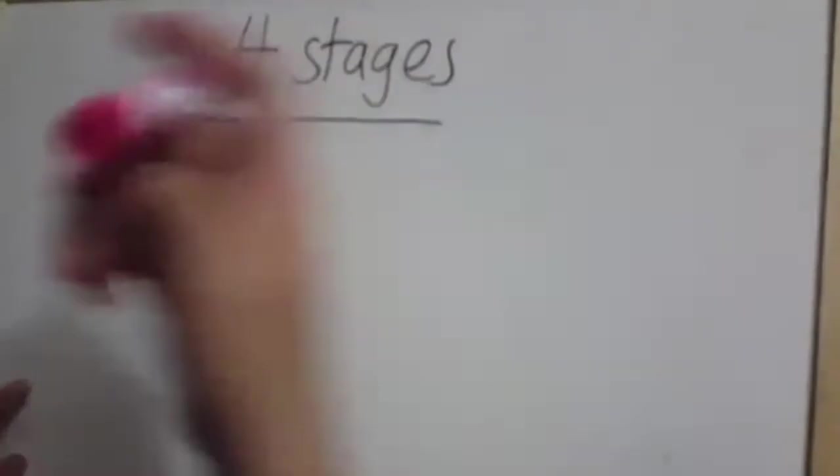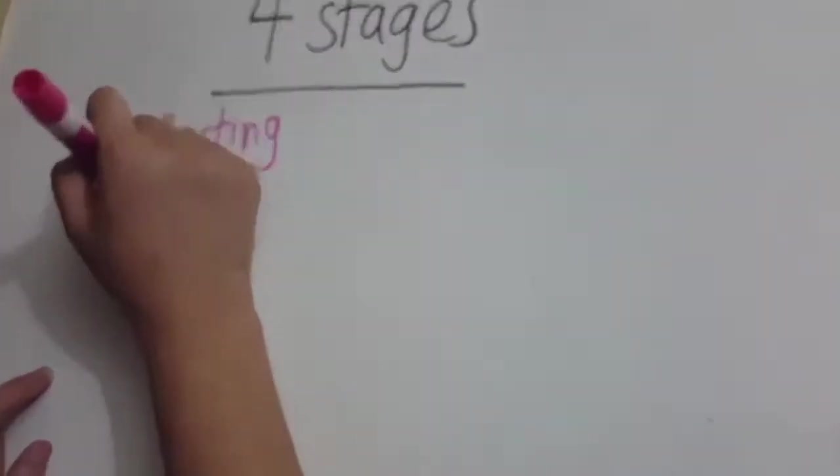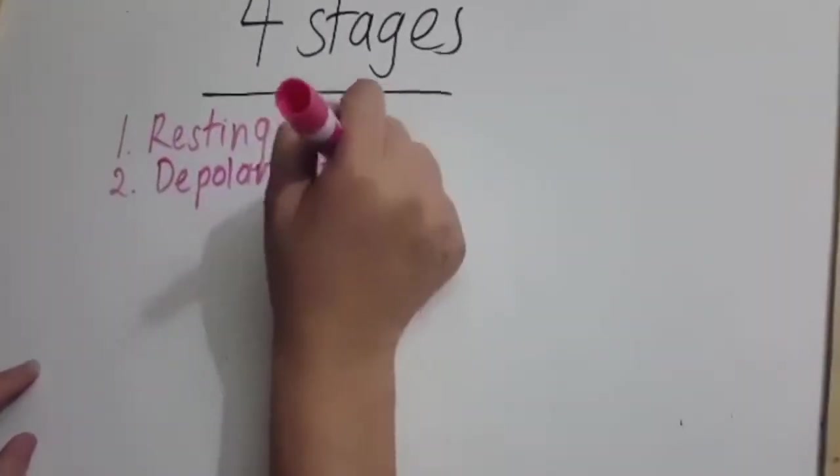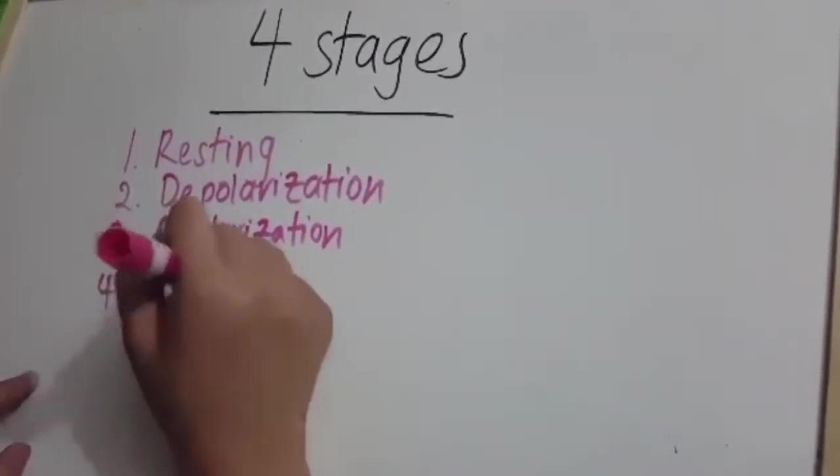Action potential is how a neuron passes a message within itself. There are four stages to this process: Resting, Depolarization, Repolarization, and Back to Resting.